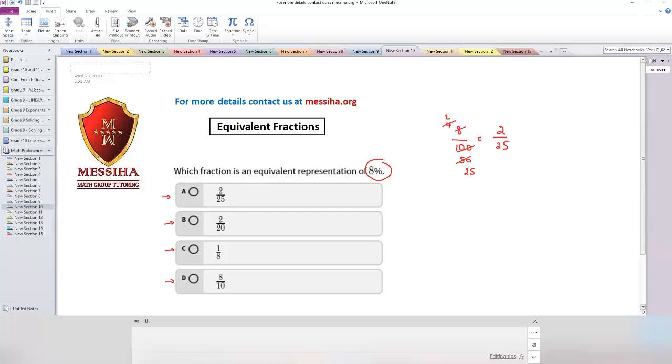So now it's time to check. Do I have 2 over 25? Yes. So that means answer number A is the best fraction that it's equivalent representation to 8%. Thank you for listening.